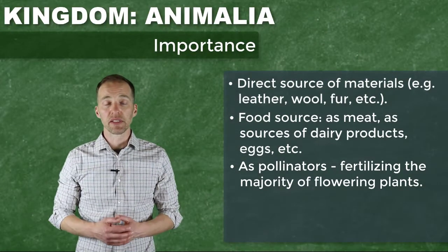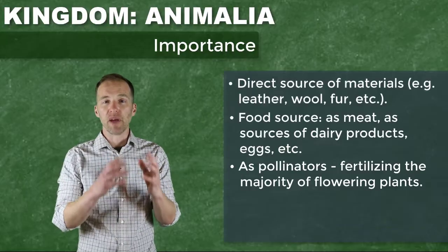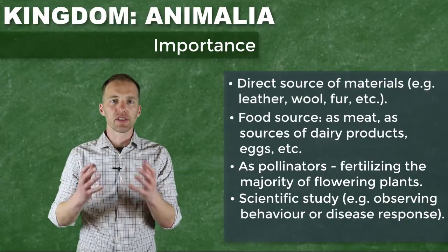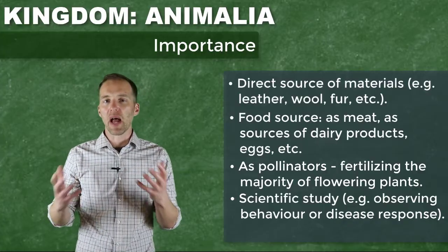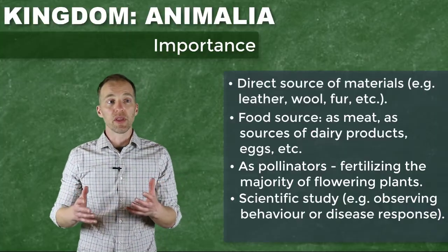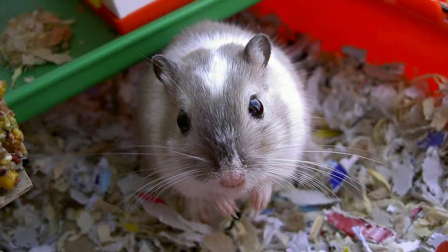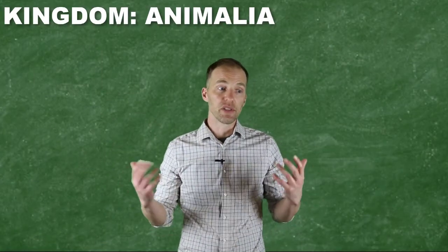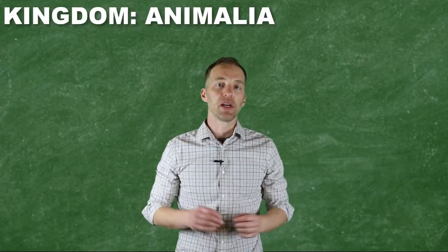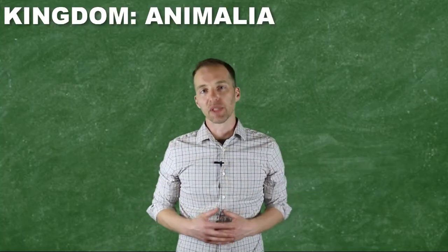We can utilize organisms in this kingdom to better understand ourselves as well. We can monitor and observe how they respond to a particular disease, and think about how their characteristics and behaviors reflect back on our own. We have these organisms within our houses or on our properties — sometimes for transportation, but certainly as pets. But just like the other videos in this series on biodiversity, the main goal of this video is to classify and characterize organisms within this particular kingdom.